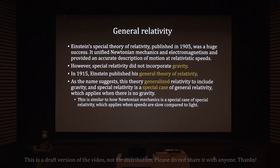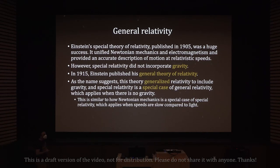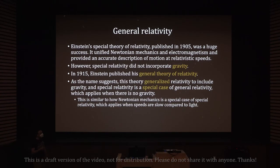Einstein's special theory of relativity, published in 1905, was a huge success. It unified Newtonian mechanics and electromagnetism and provided an accurate description of motion at relativistic speeds. However, special relativity did not incorporate gravity. In 1915, Einstein published his general theory of relativity, which generalized relativity to include gravity. Special relativity is a special case of general relativity that applies when there is no gravity.